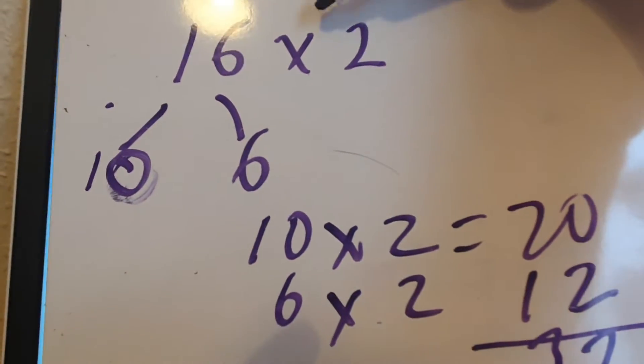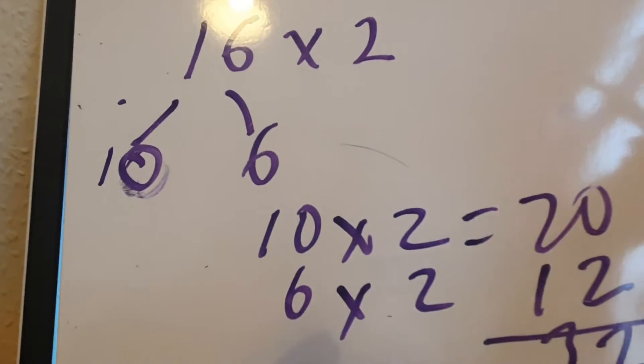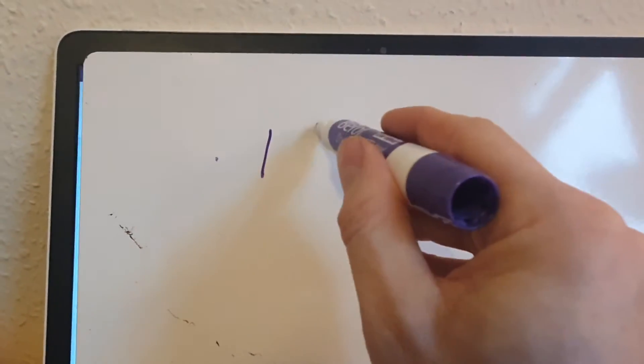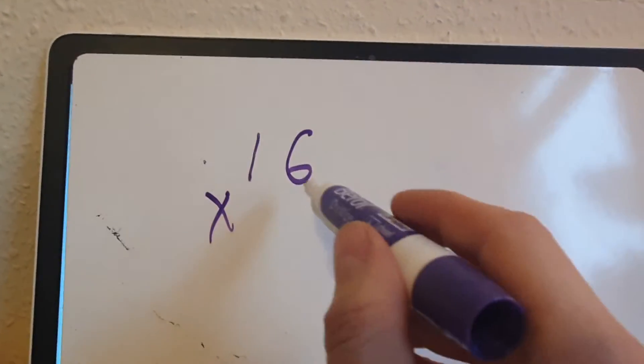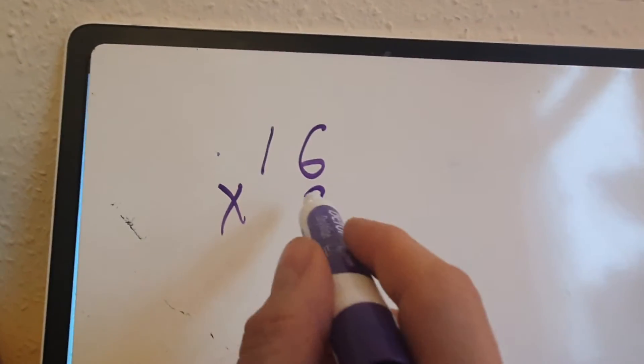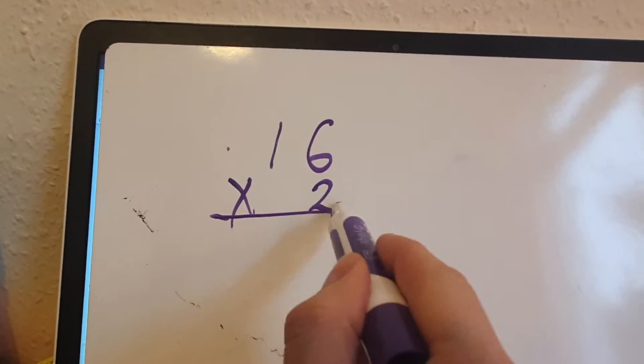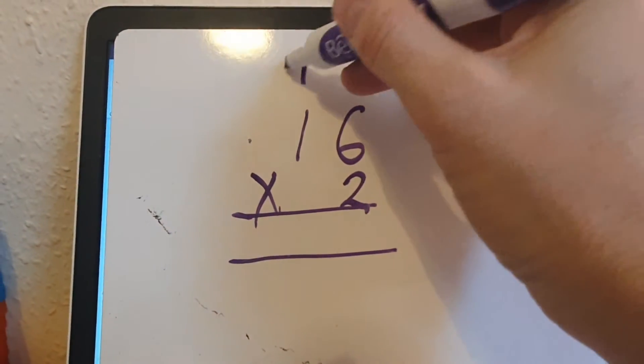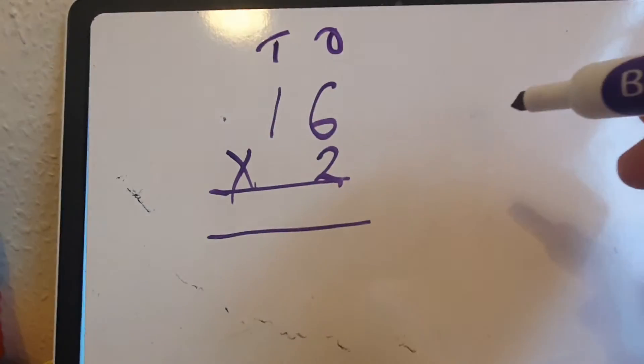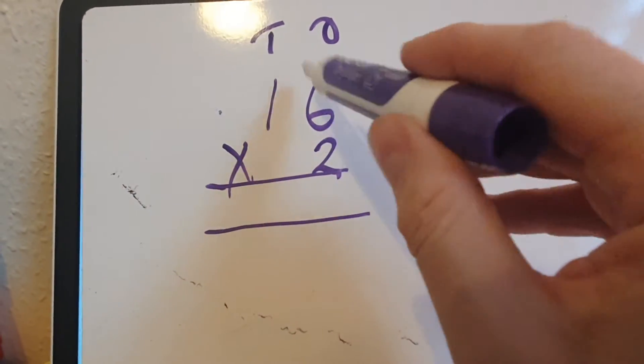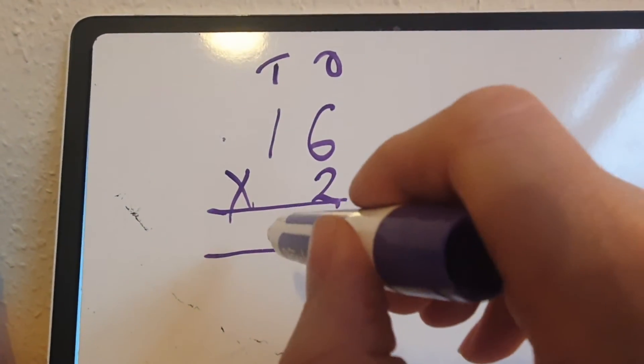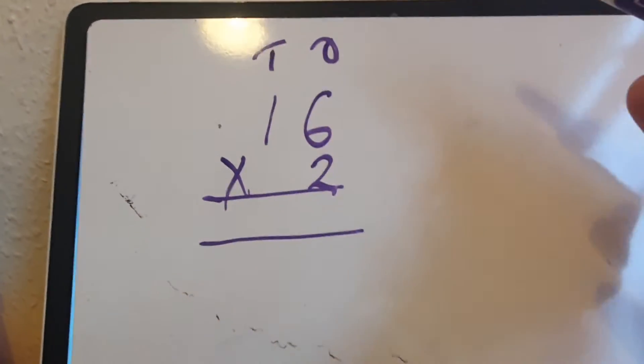Another way you could do it is you could write out your twos 16 times, but you'd be there forever. So let's look at a slightly different way. We could use our column multiplication method. We do the column method for addition and subtraction, and we can also do it for multiplication. So there's our tens and these are our ones. I've got 6 times 2, or we can say 2 times 6. So the answer is 12.